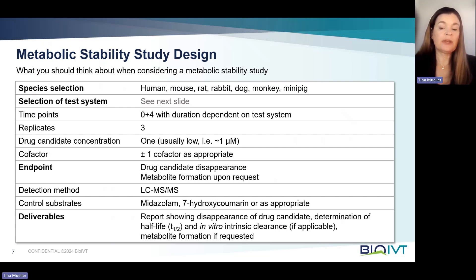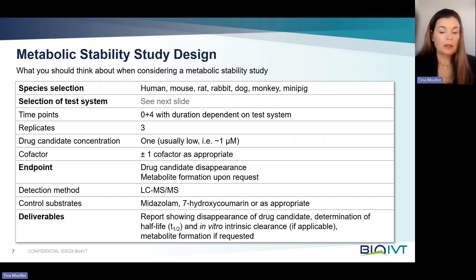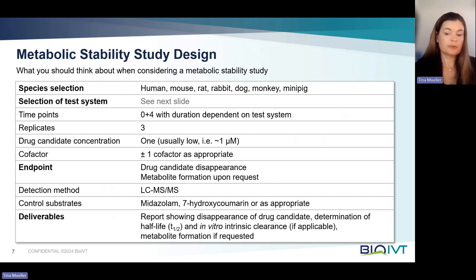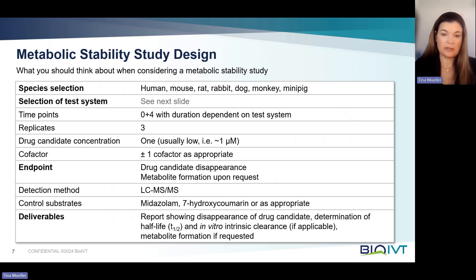It also needs to be determined what the endpoint is. Typically that is drug candidate disappearance, but there are cases where it might make sense to look for metabolite formation, or assess both drug candidate disappearance as well as metabolite formation. The detection method is LC-MS/MS, and control substrates are included to confirm that the test system is metabolically active. The deliverables are a report or data summary showing the chosen endpoint, as well as the determination of the half-life and in-vitro intrinsic clearance if the data allows it.